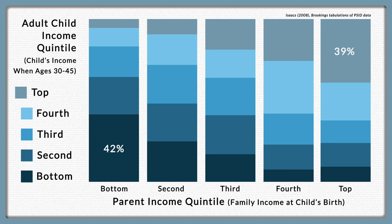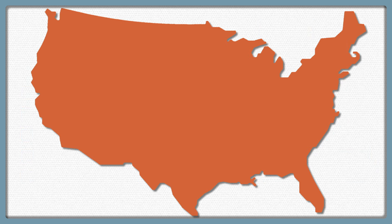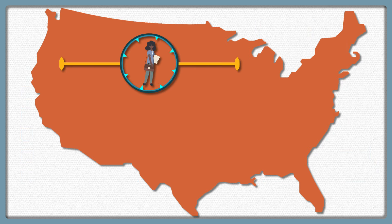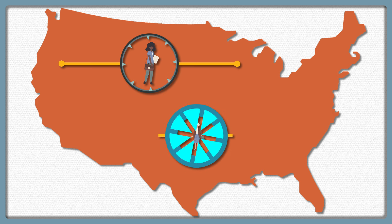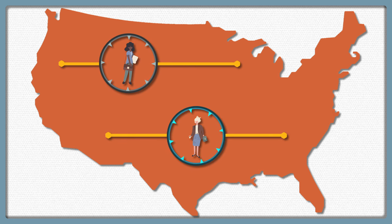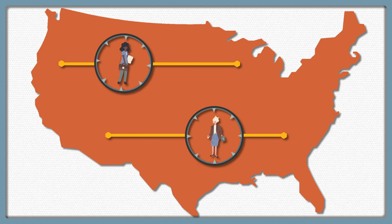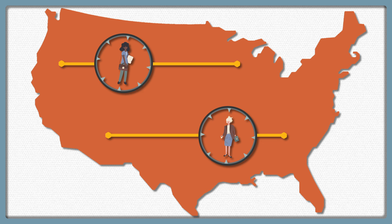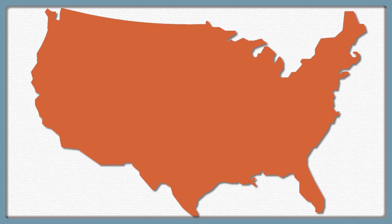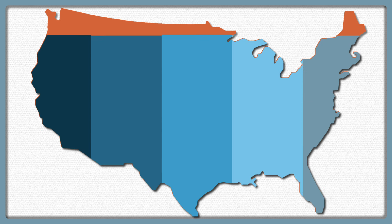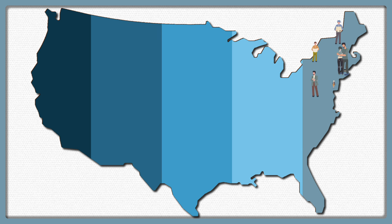We can think of these numbers as averages across a whole population, but exceptions to these averages matter. In the U.S., mobility rates for African American and Hispanic people are generally lower than for non-Hispanic whites. And remember how someone born into the richest 20% of families is likely to stay in that group? That's far less true for African Americans born into the richest 20%, and even those in the middle class are less likely to stay there.